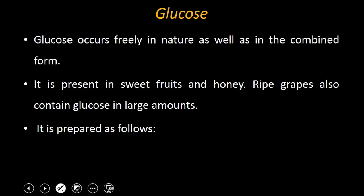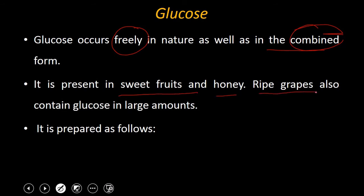Now I would like to discuss about glucose. Glucose occurs freely in nature as well as in combined form — both forms are available in nature. It is found in sweet fruits and honey, and ripe grapes contain glucose in large amounts. Now we will discuss about its preparation.